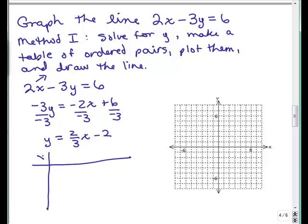So, I have y equals positive 2 thirds x minus 2. And then, we could pick any values for x. I'm going to choose multiples of 3 to avoid fractions. So, I'm going to put in negative 3, 0, and positive 3. 2 thirds times negative 3 minus 2, the 3's cancel, I get negative 2 minus 2.